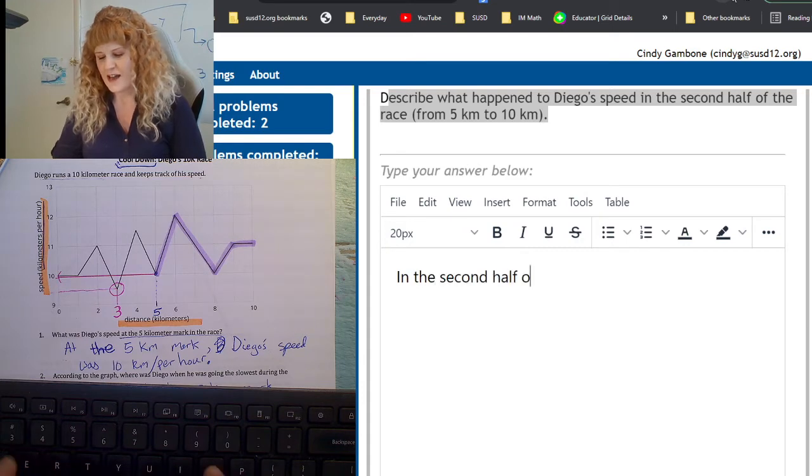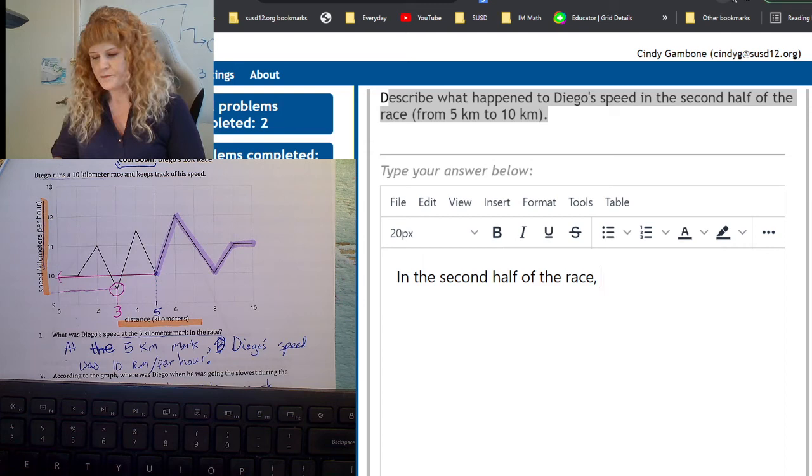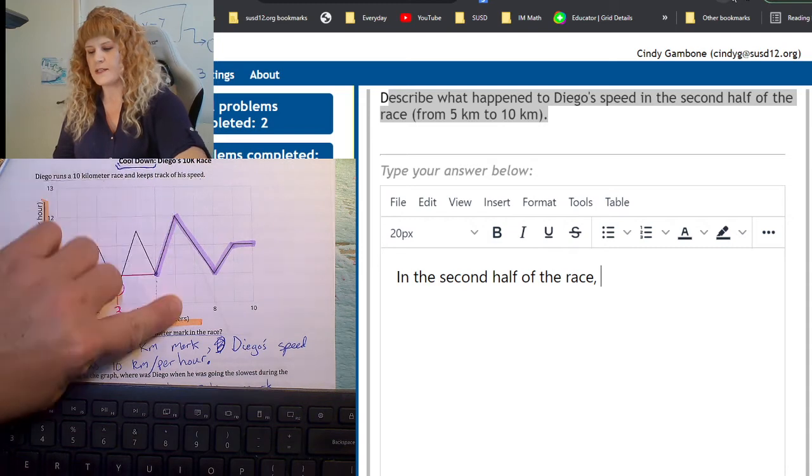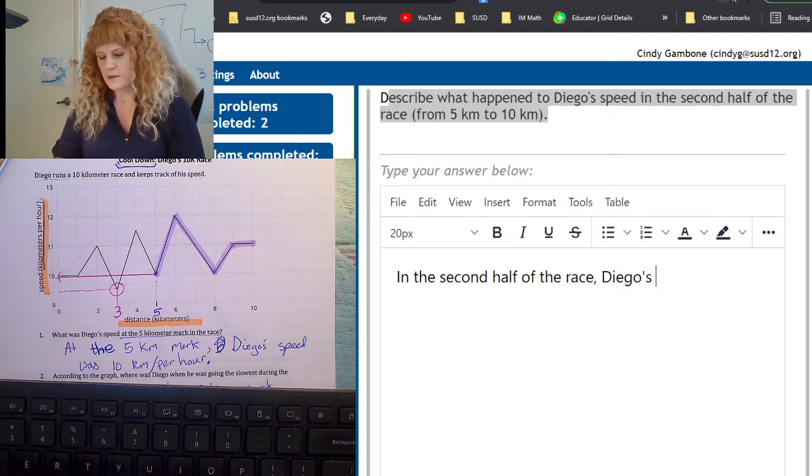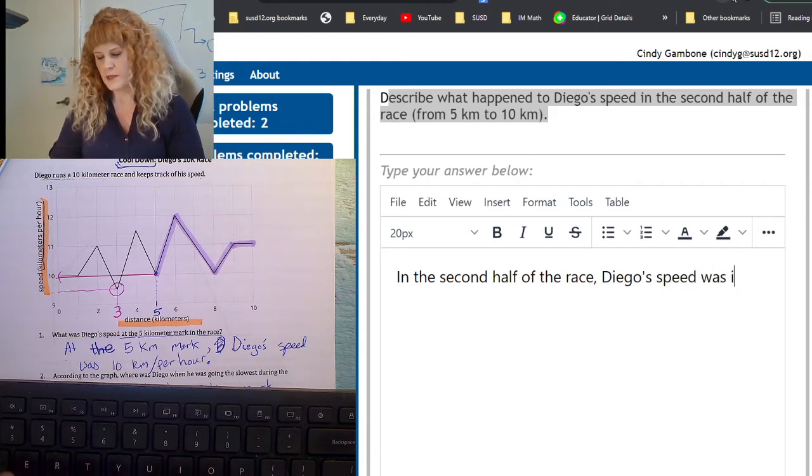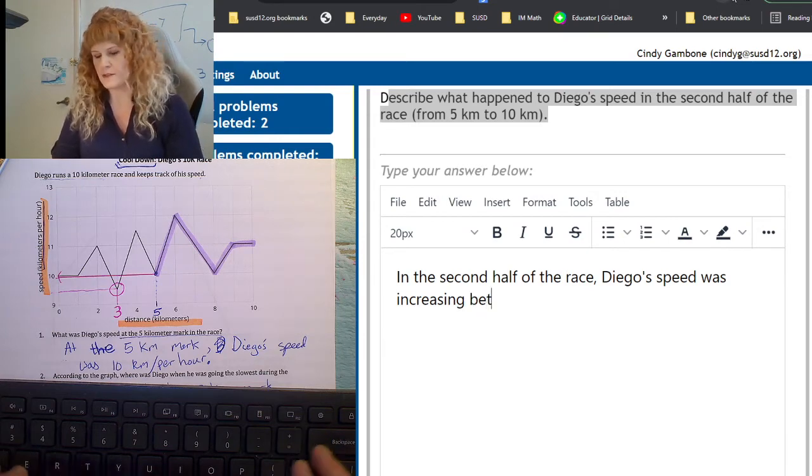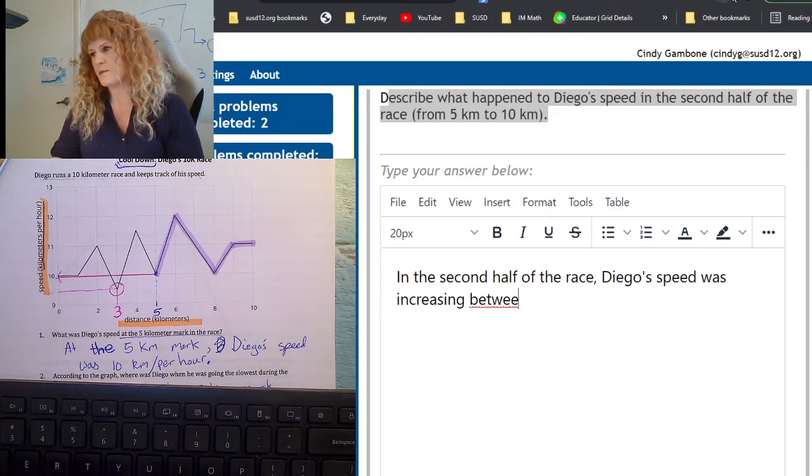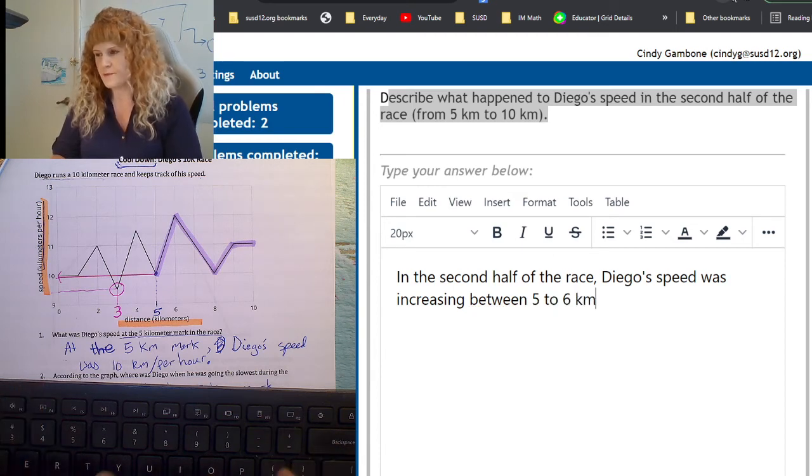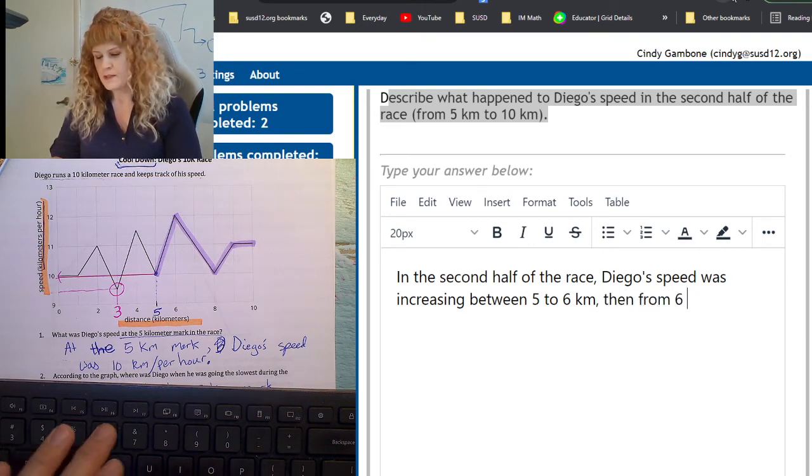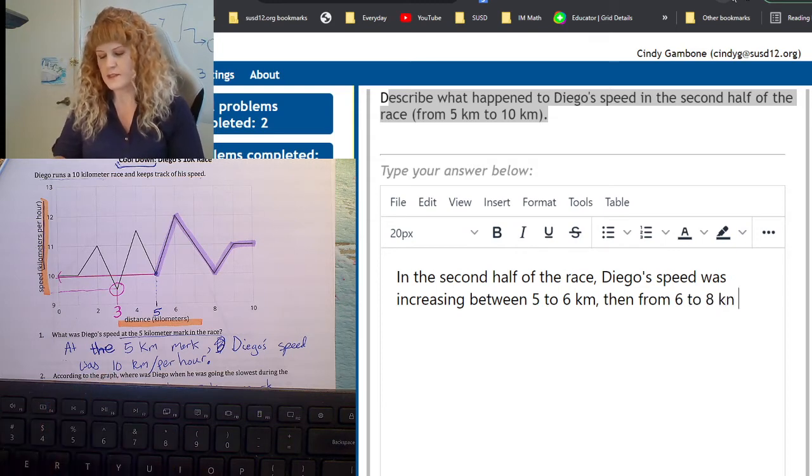In the second half of the race, Diego's speed was increasing between five to six kilometers. Then from six to eight kilometers, his speed was decreasing.